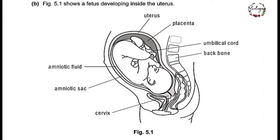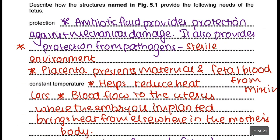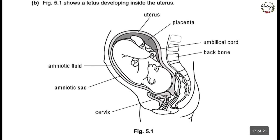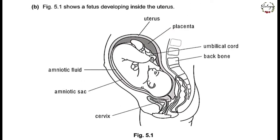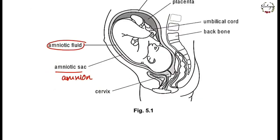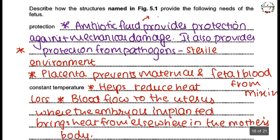Moving to the next question. Figure 5.1 shows a fetus developing inside the uterus with structures labeled. Describe how the structures named in the figure provide the following needs of the fetus — protection. If you look at this, the main thing about protection is mechanical protection, protection from mechanical injuries. When we think about that, we have to think about the amnion containing the amniotic fluid — also known as the amniotic sac. The amniotic fluid acts as a shock absorber to provide protection against mechanical damage.